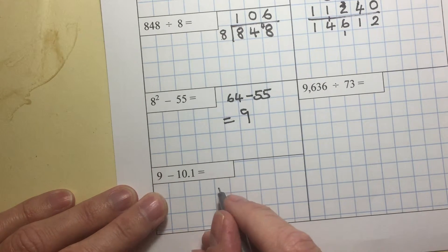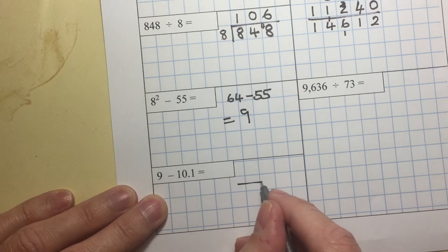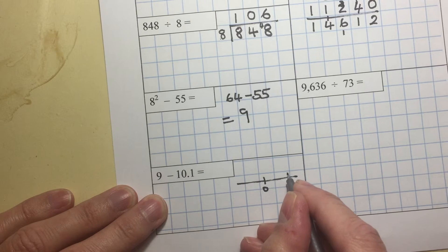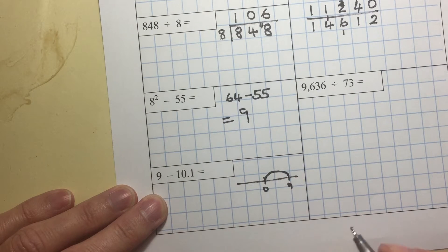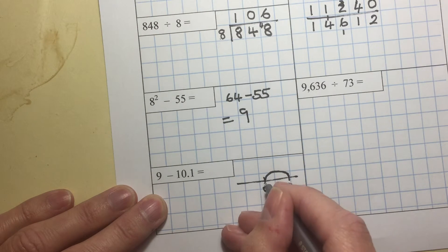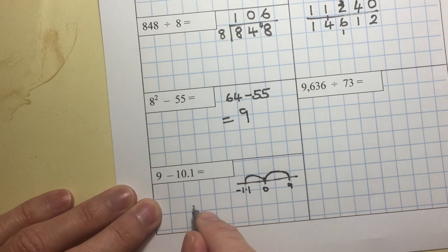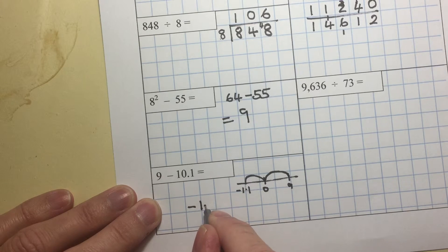9 take away 10.01. 9 would give us 0.01. But we've still got another 1.1 to take away. And that will take us to minus 1.1.